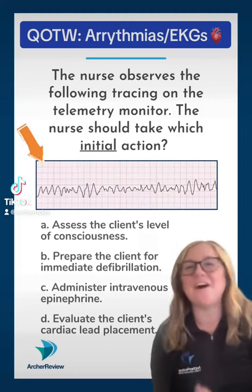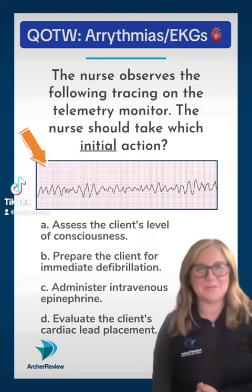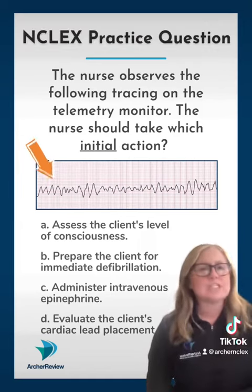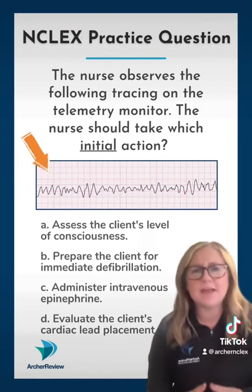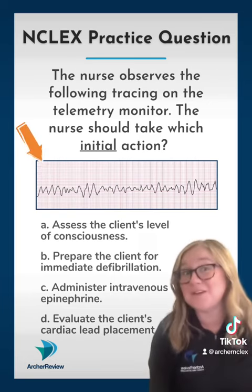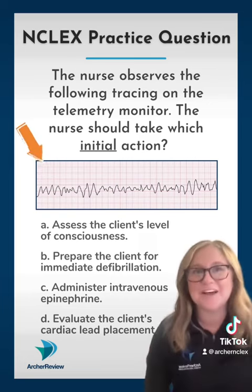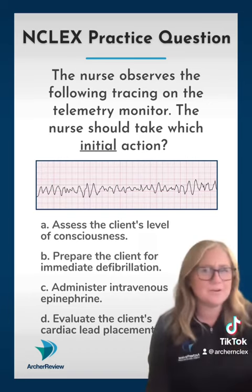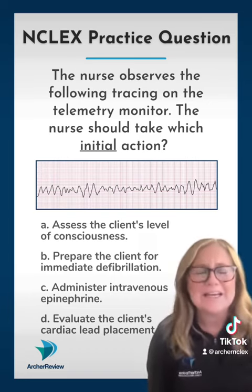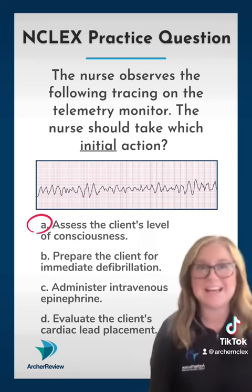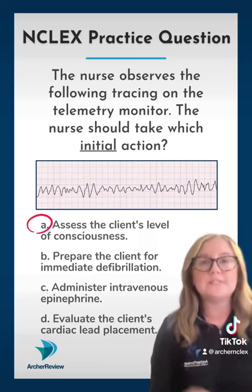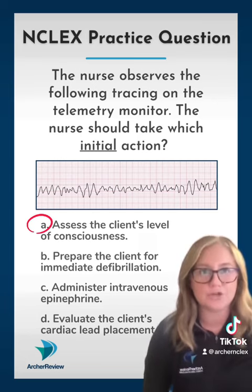Quick, you see this on the telemetry monitor. What is your immediate action? Well, first ask yourself, what is this EKG strip showing you? Well, presumably V-fib, right? And V-fib, D-fib. But what if your client pulled the leads off? What if they're just moving around in bed? You need to assess your client, because the stem of this question only told you that you see this on the telemetry monitor.